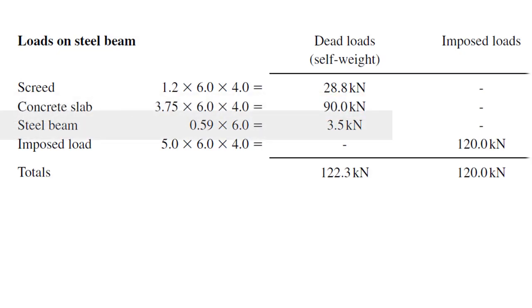Next load is load of the steel beam. It's also one of dead loads. 0.59 is the self-weight of the steel beam, which we calculated earlier before. 6 is the length of the steel beam, so the load of the steel beam is 3.5 kilonewtons.